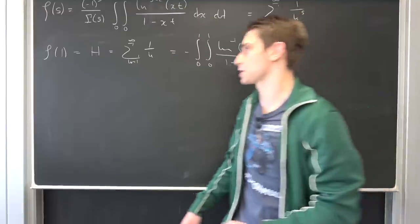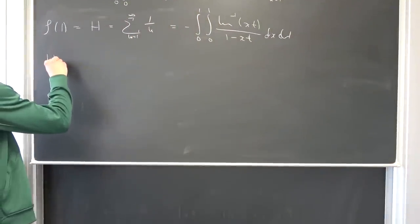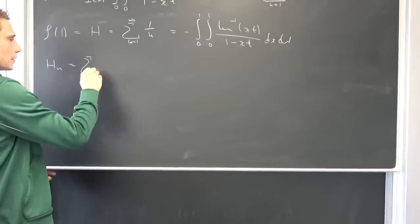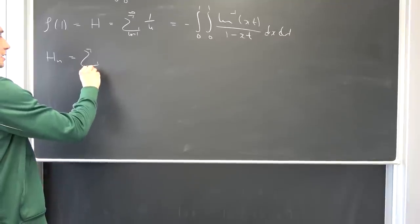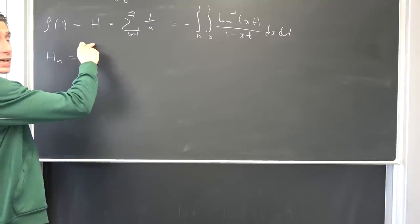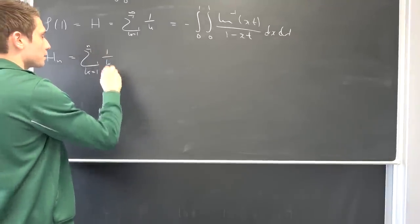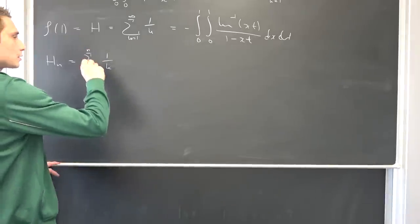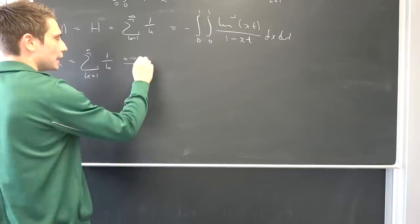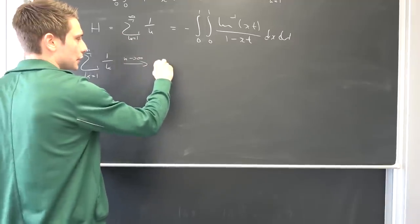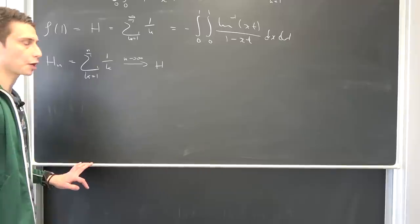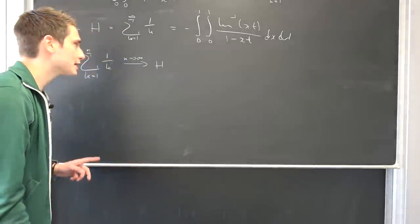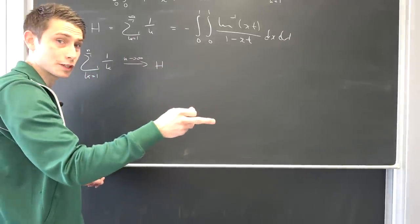We are going to take a look at the partial sums of the harmonic series. We are going to denote the sequence by h with little n down here, and it's just consisting of the partial sums from k equals 1 to n of 1 over k. You might notice if we let n go to infinity, we are actually going to arrive at H in the limit.